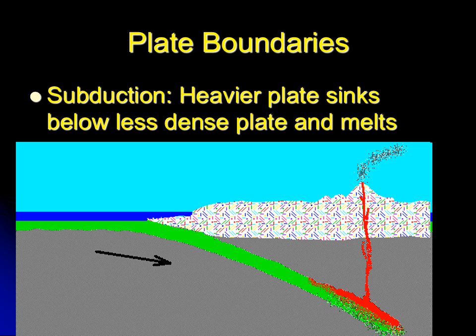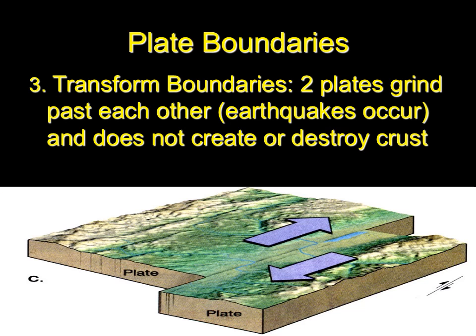Subduction is when the heavier plate sinks below the less dense plate and melts. It gets deep enough to where it's hot, burns up, and the molten material rises because hot things rise. It carves out a path up to the top — in this case through a mountain — which makes a volcano.